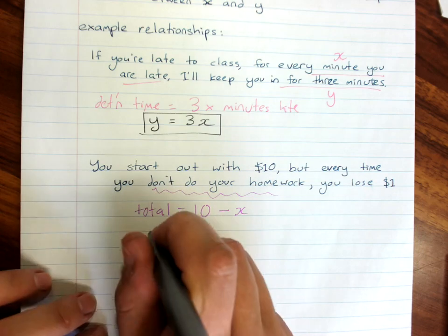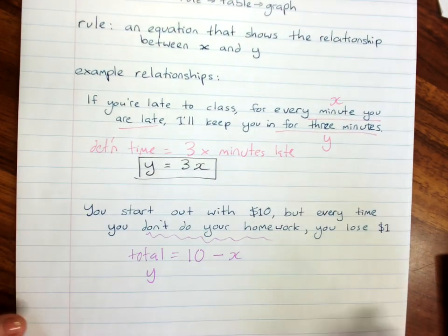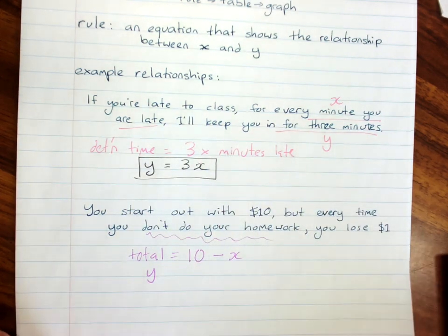then the number of times I don't do my homework, what I've got is 10 minus that. So we'll graph both of these rules. I'll make this a y. So that's the sort of rule that we might end up graphing, and it always comes from some real life situation.